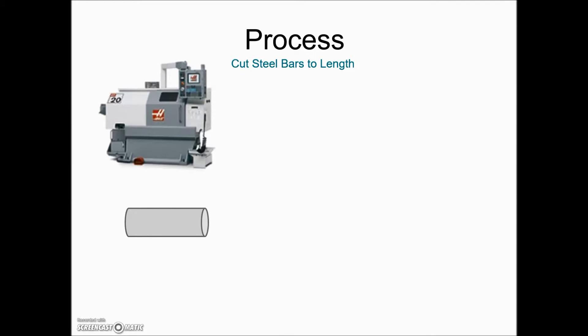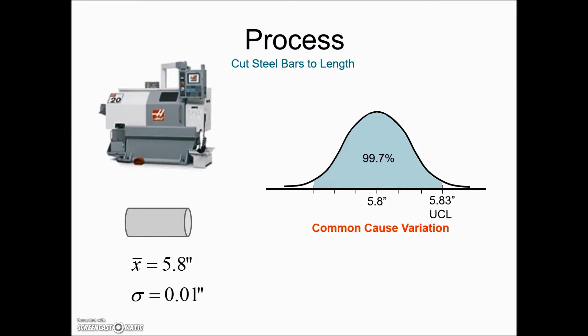The variation found in a process is considered to be normal and a natural thing that cannot be completely eliminated. So if we look at this example here, the process is to cut steel bars to a specified length and taking some samples, they found the mean to be 5.8 inches and the standard deviation to be 0.01 inches. If we graph that using our normal distribution, this would be our range of values. 99.7% should be three standard deviations above the mean and three standard deviations below the mean.